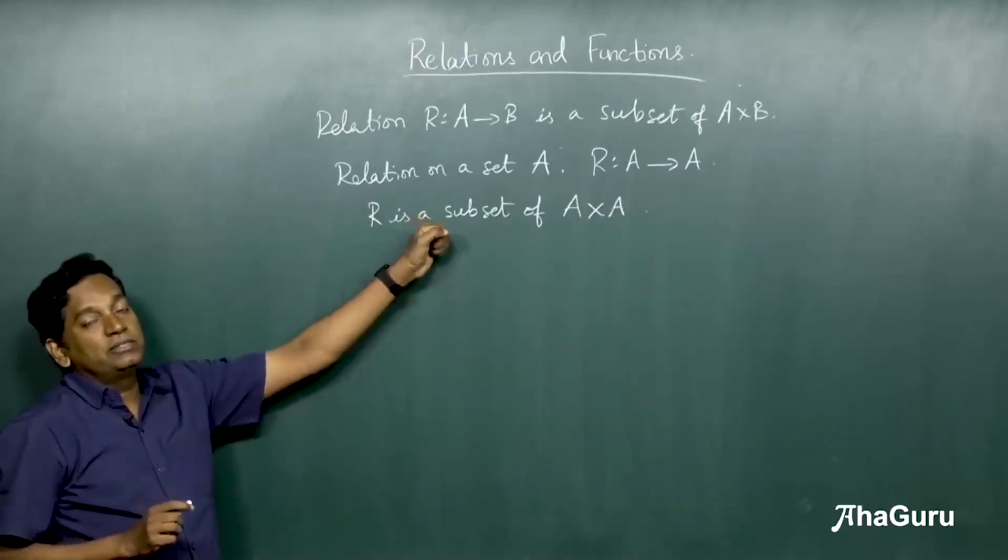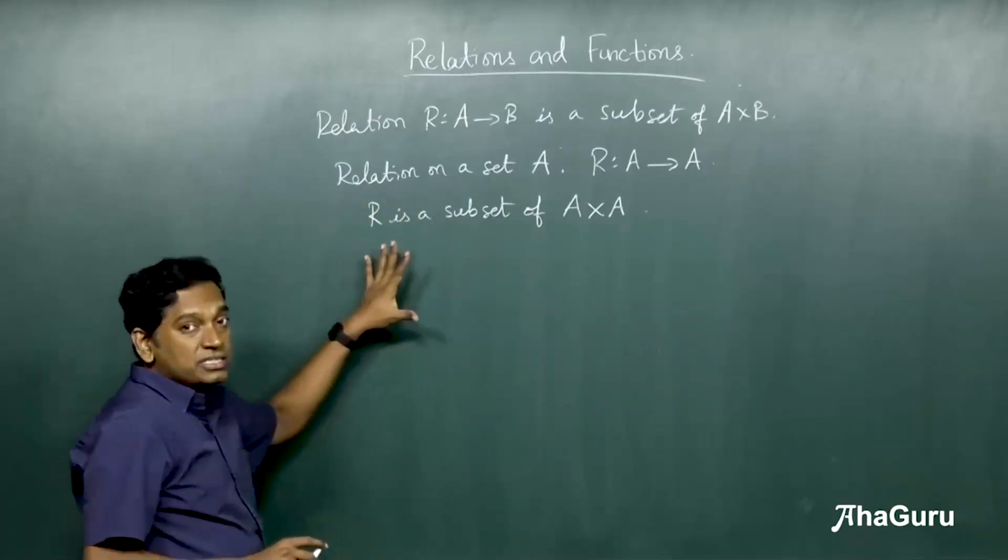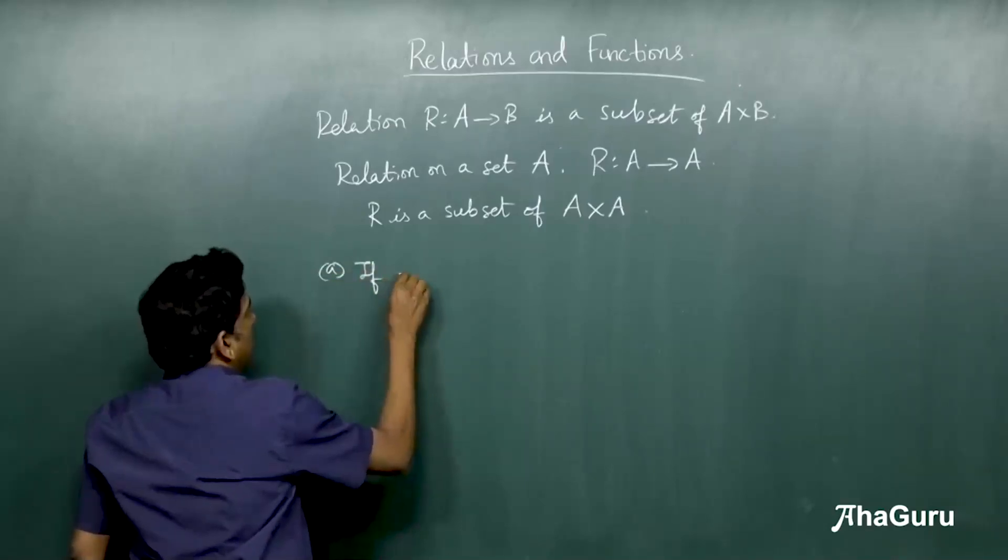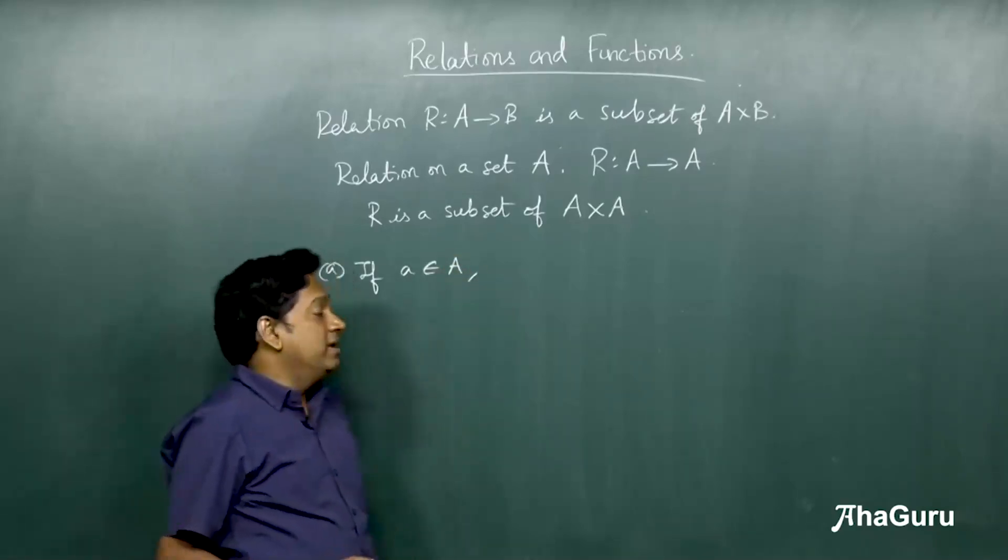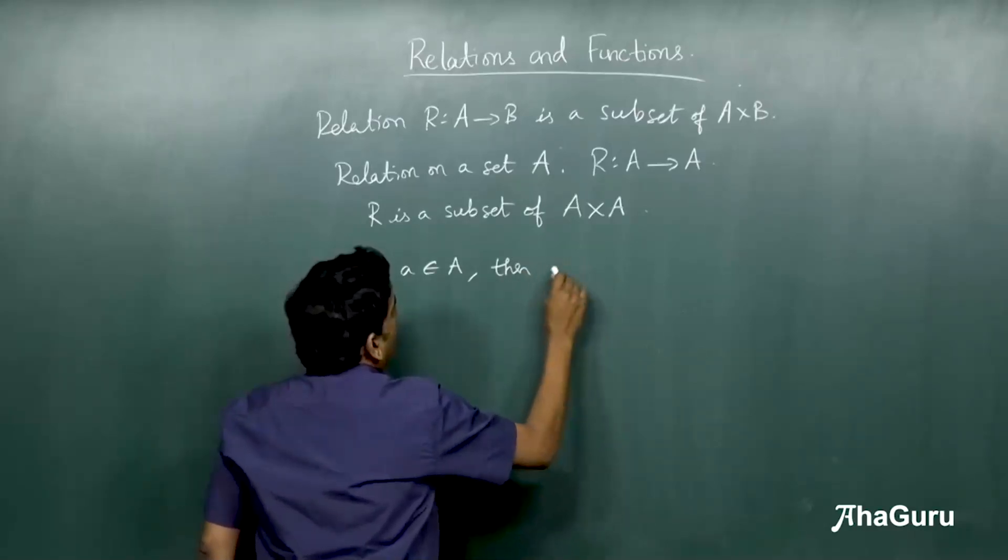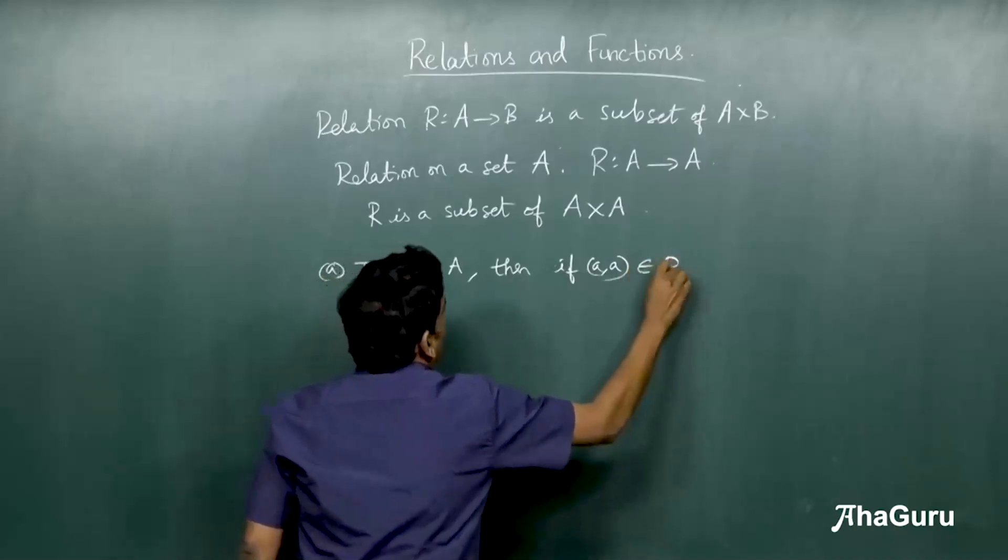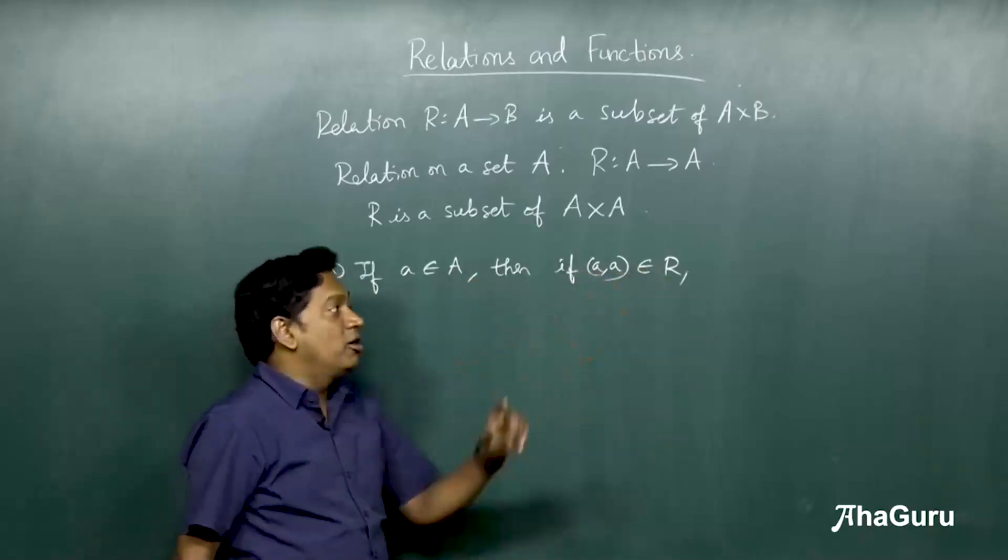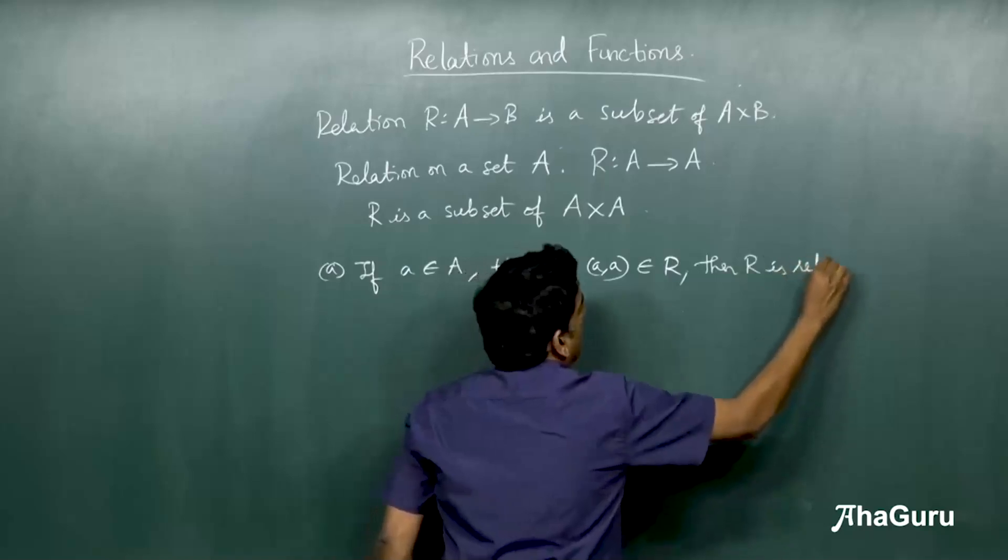Now, we want to understand some properties of such a relation. We are going to have some definitions that are important. Let's see that if A is an element of A, then if (A,A) belongs to R for all A, for every A, then we say R is reflexive.